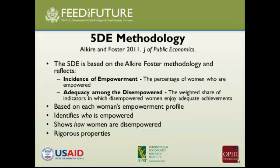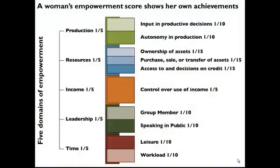The first step in constructing the index is to create an empowerment score for each woman, based on 5 domains and 10 indicators. The woman is graded as having sufficiency or insufficiency — adequacy or inadequacy — in each indicator. The weights are nested: each of the 5 domains has equal weight, and the indicators within each domain have equal weights. You can see that control of income has the highest weight at one-fifth, resources variables have one-fifteenth each, and the others have one-tenth each.